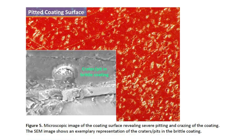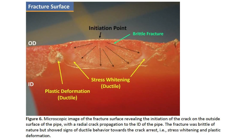Figure five: microscopic image of the coating surface revealing severe pitting and crazing of the coating. The SEM image shows an exemplary representation of the craters and pits in the brittle coating. Figure six: microscopic image of the fracture surface revealing the initiation of the crack on the outside surface of the pipe with radial crack propagation toward the inside of the pipe.